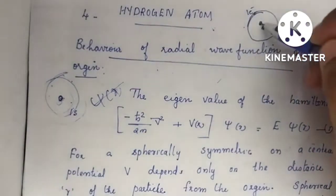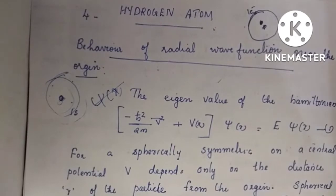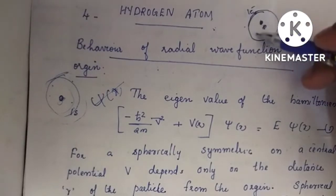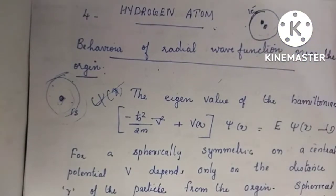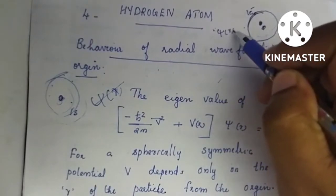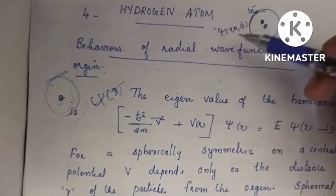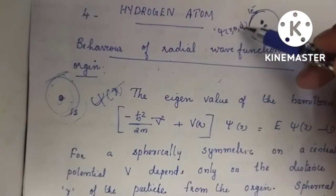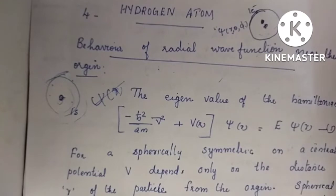We have a proton and an electron. As we know, the hydrogen solution will revolve the wave in nature — this is the wave function. We have psi of r, theta, phi. This is the radial component, this is the angular component, and this is the spherical component.